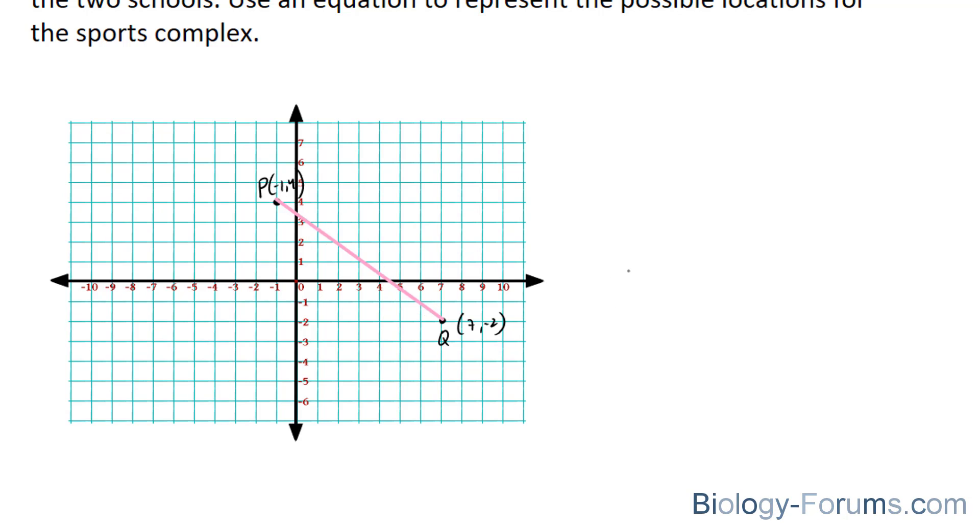And the sports complex, if it were located right in the middle, the midpoint, that would be equidistant. So let's find out what the midpoint is. The midpoint formula is as follows: M is equal to x1 plus x2 over 2, and y1 plus y2 over 2.